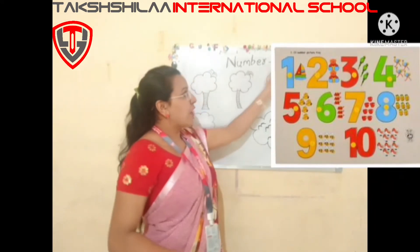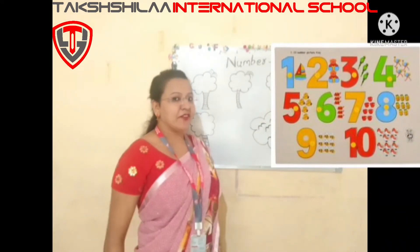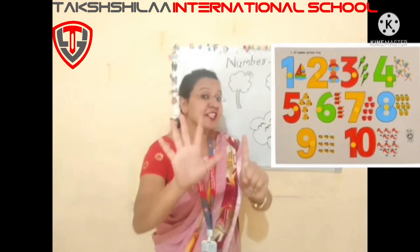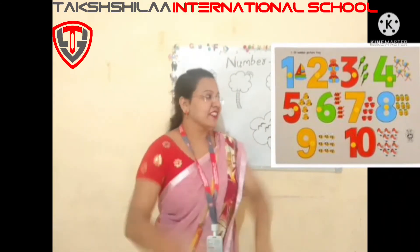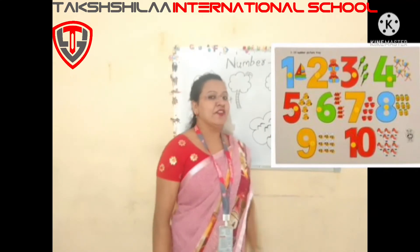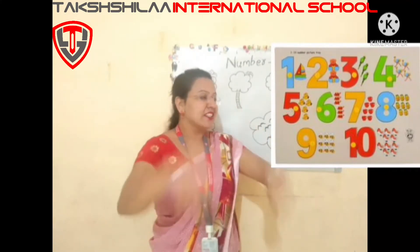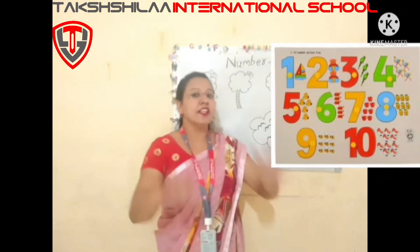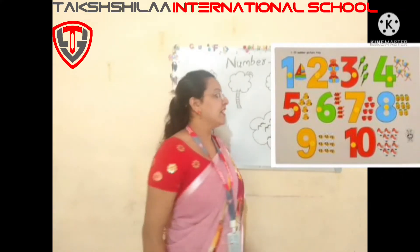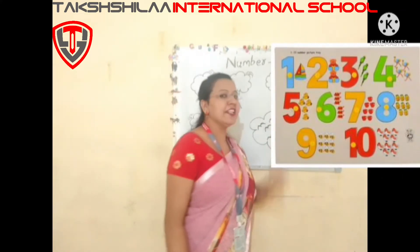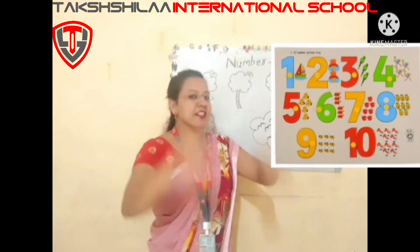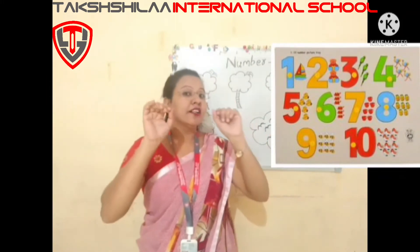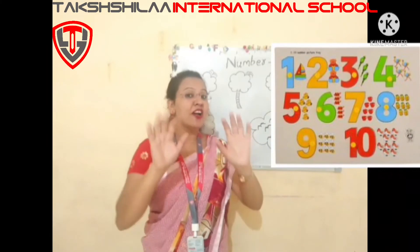Today we learn how to write number 5. This is number 6 with 6 objects, then number 7 with 7 objects, number 8 with 8 objects, number 9 with 9 objects, and then number 10.